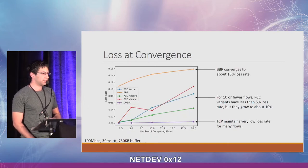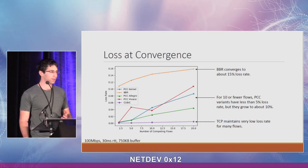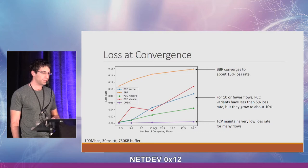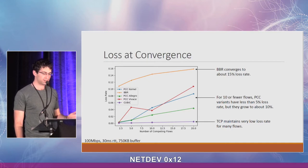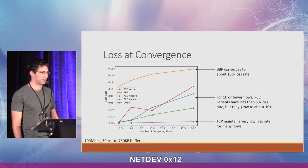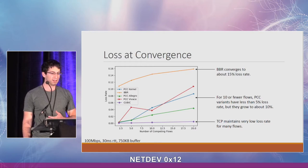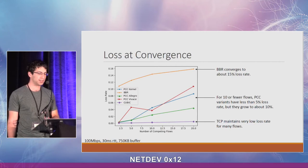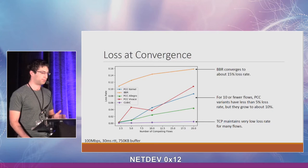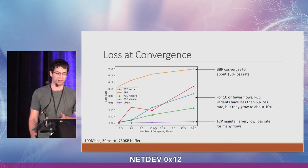Loss at convergence means how much random loss the algorithm causes when multiple competing flows using the same algorithm reach the convergence point. BBR converges to around 15% loss. Cubic does extremely well here, maintaining a really low loss rate at convergence. The PCC variants all have an increasing loss rate as the number of flows increases, doing well up to about 25 competing flows, where BBR starts to get ahead of the PCC variants.